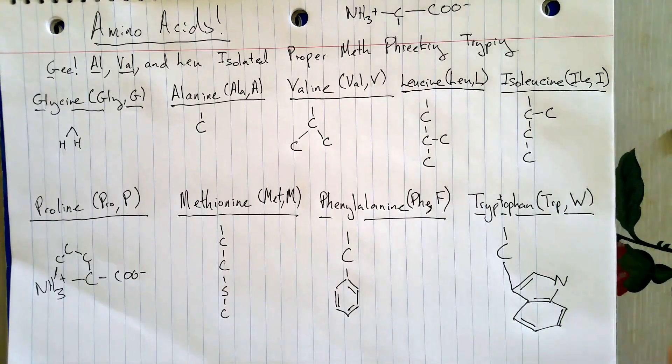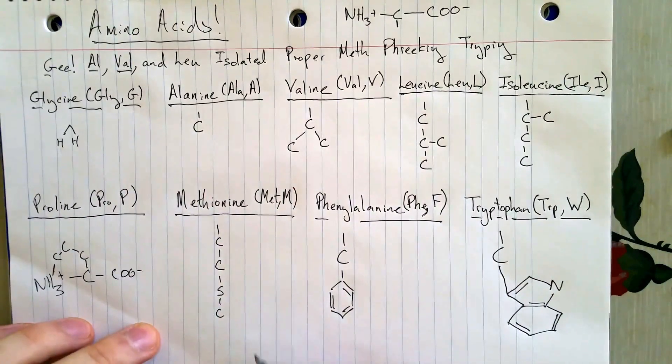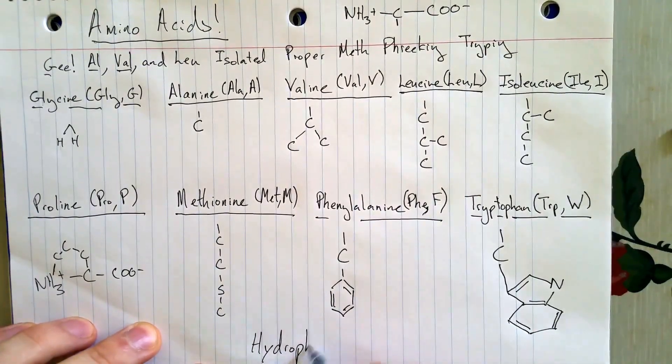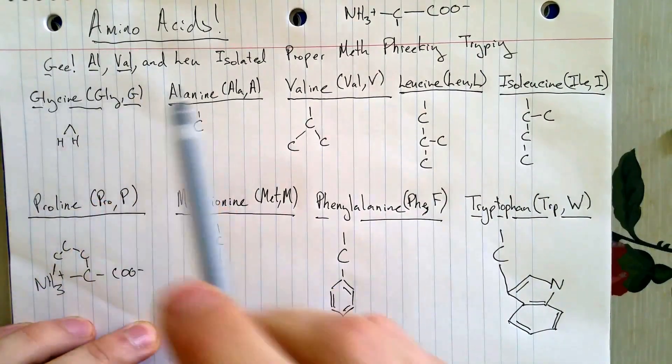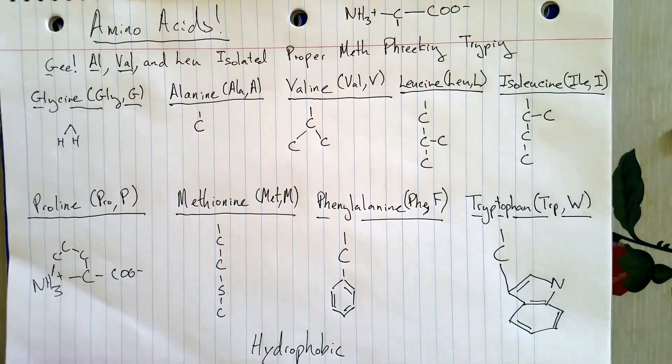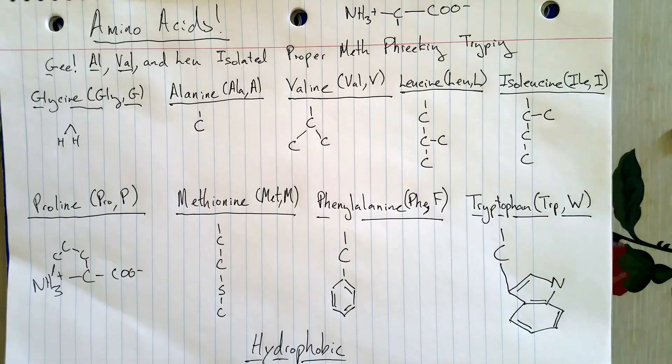And as you can imagine, if you were high on meth and running a meth lab, you might very well get very paranoid and very phobic. And indeed, all of these amino acids are hydrophobic, just like Al, Val, and Lou would be if they were running a meth lab high on meth. So those are the hydrophobic amino acids. And in my next video, I'm going to do the amino acids with charged side chains. So catch you there.